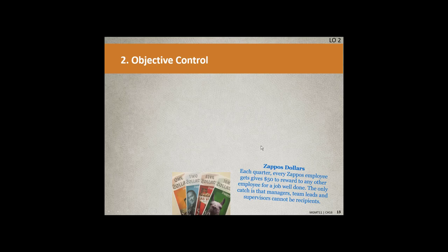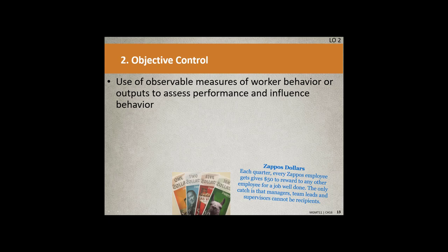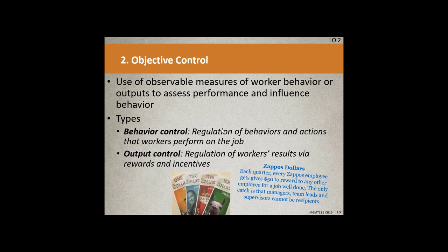Objective control — number two — is the use of observable measures of worker behavior or output to assess performance and influence behavior. There are two types: behavioral control, which regulates the behaviors and actions that workers perform, and output control, which regulates workers' results through rewards and incentives. An example is Zappos, where employees can nominate another employee every month — not a manager or team leader — and that person can get up to 50 dollars, called 'Zollars' but they're real dollars. They usually nominate people who have exhibited one of the main tenets of the Zappos philosophy. That's an example of behavioral objective control.